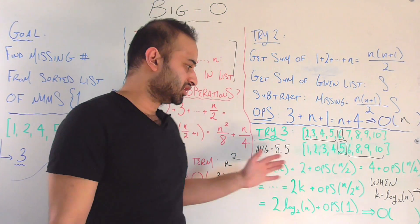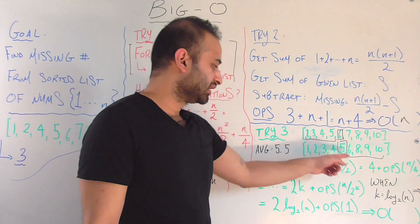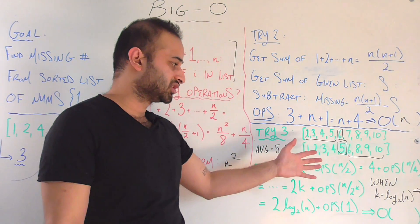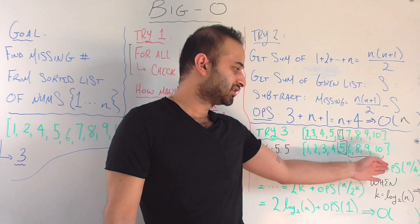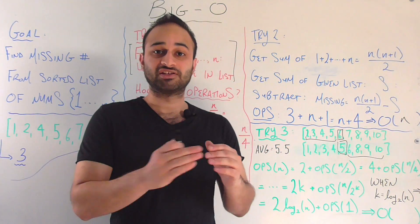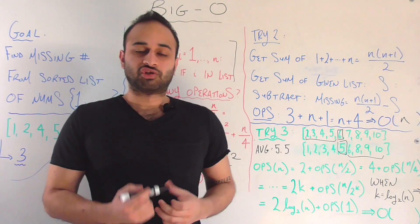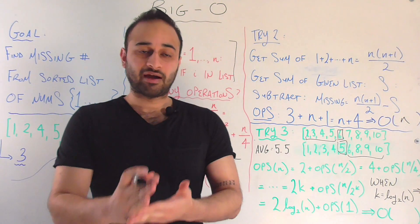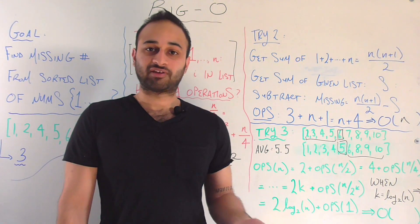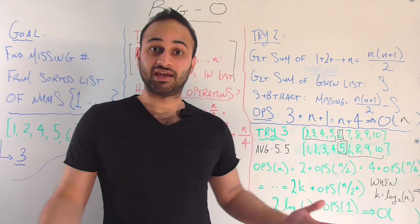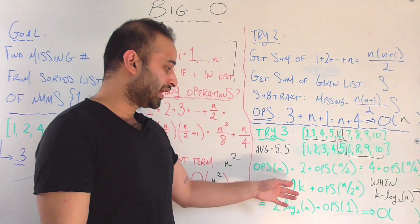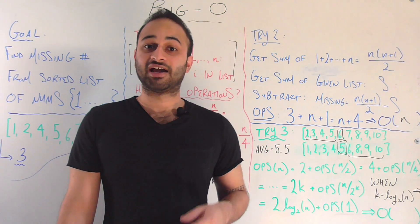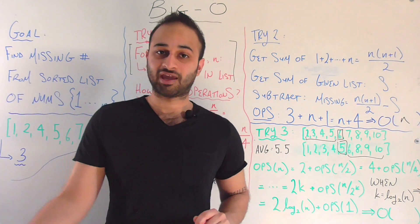So the number of operations to finish this problem on a list of size n is two operations, plus however many operations it takes on a list of size n over two. We can just continue this recurrence, splitting it up the same way to get: four operations plus the number of operations on a list of size n over four. I can keep splitting the list in half k times, giving 2k operations plus the operations on a list of size n divided by 2 to the power of k.